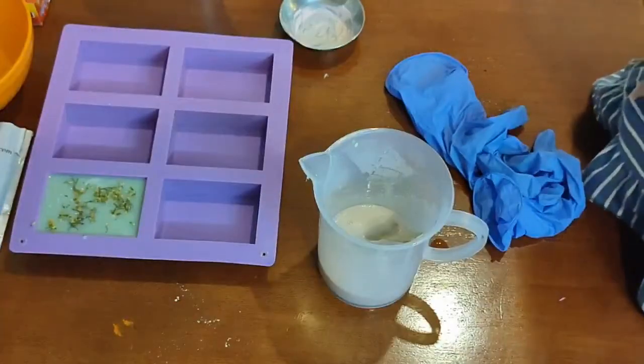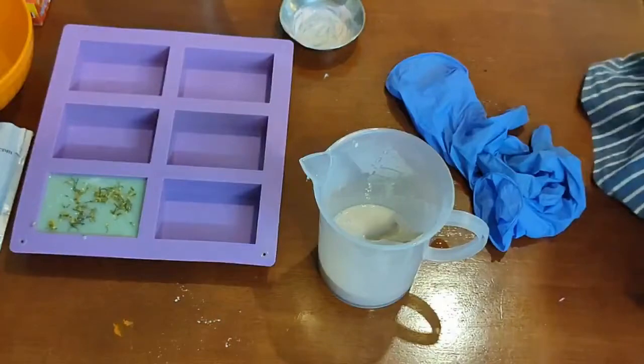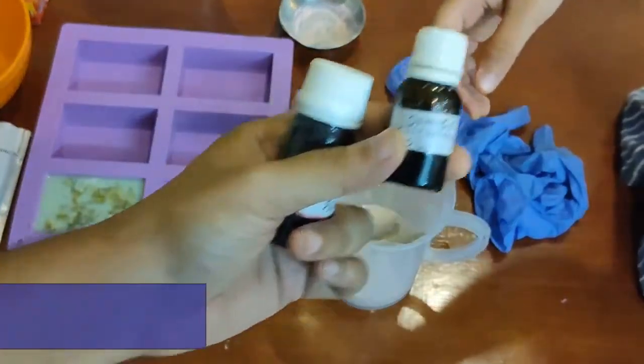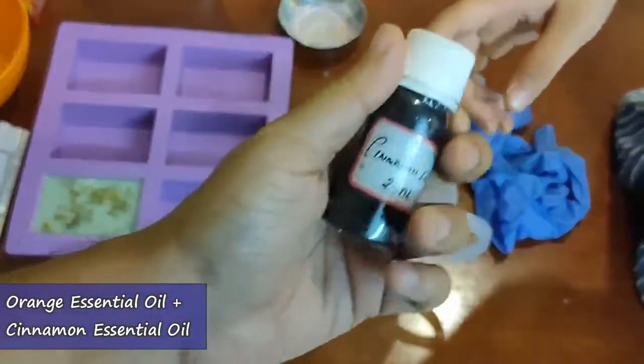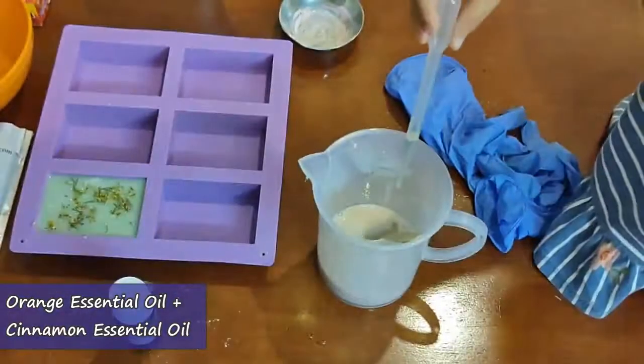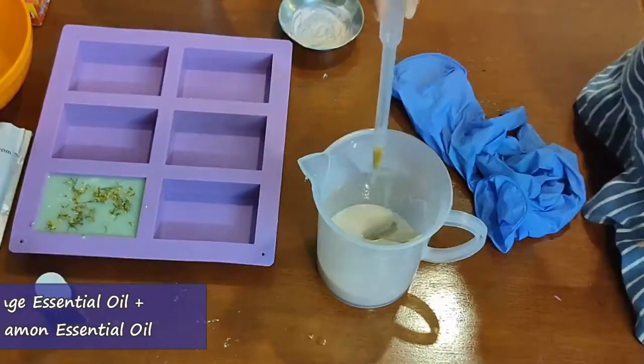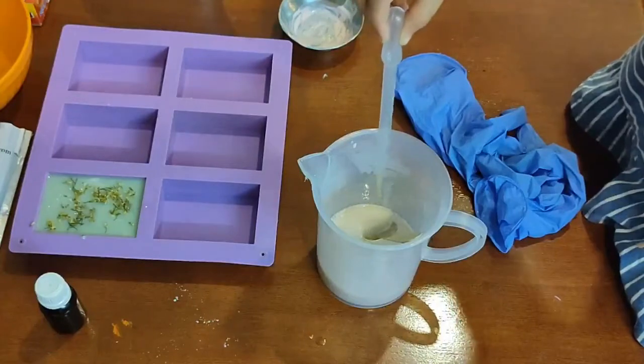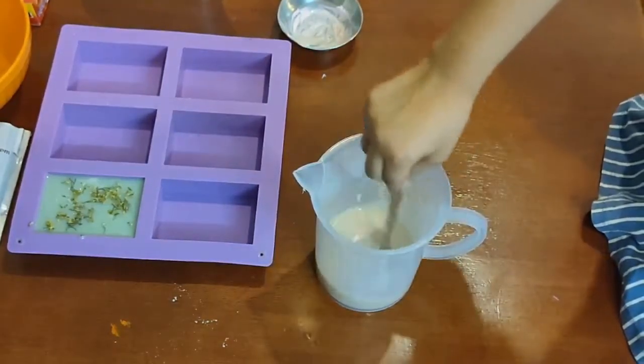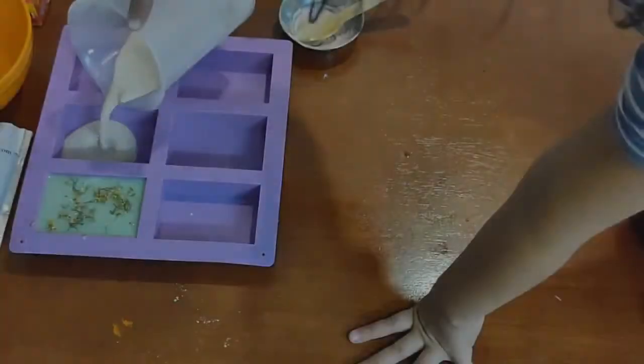Now we are adding essential oils. We are using orange essential oil and cinnamon essential oil. Now we are going to mix and pour it into a mold.